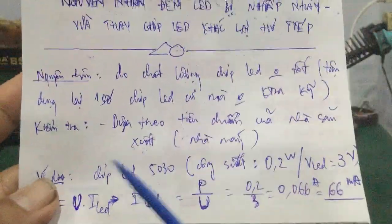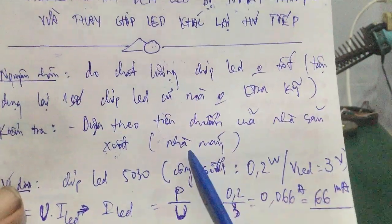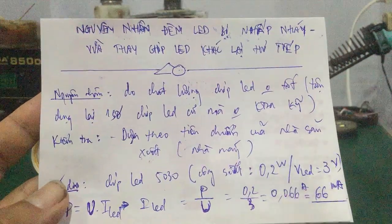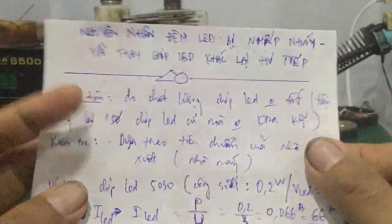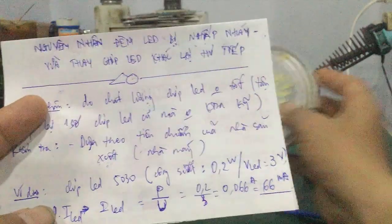Nguyên nhân chính gây ra những hiện tượng ở trên là do cái chất lượng chip led, chất lượng chip led của mình là không tốt. Mà các bạn kiểm tra tận dụng lại những chip led mà cũ, các bạn không kiểm tra kỹ, nó sẽ gây ra hiện tượng: khi vừa thay chip led thì nó lại tiếp tục hư cháy chip led khác. Ở đây mình nói về cái cách kiểm tra dựa theo cái tiêu chuẩn của nhà sản xuất, hoặc là từ nhà máy đưa ra, với mỗi con chip led như thế này.